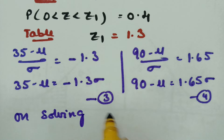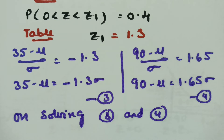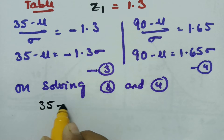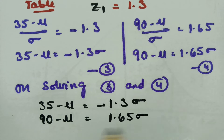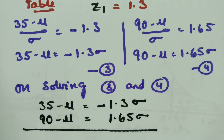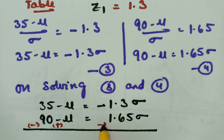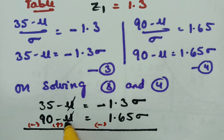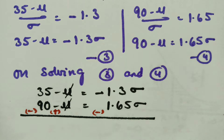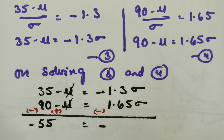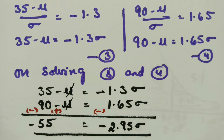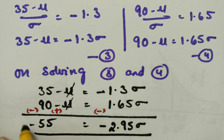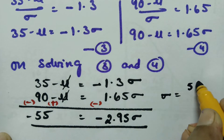On solving equations 3 and 4: subtracting equation 3 from equation 4, the mu terms cancel. We get 90 minus 35 equals 1.65 sigma minus (minus 1.3 sigma), which simplifies to 55 equals 2.95 sigma. Here 1.3 plus 1.65 equals 2.95.